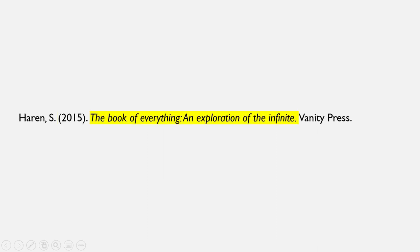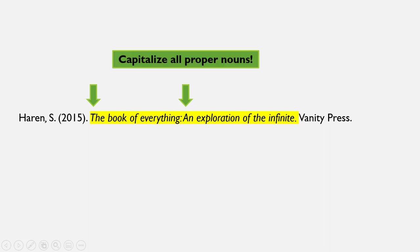The next element in the citation is the title. Only certain words of the title are capitalized in an APA book citation: the first word of the title, the first word of the subtitle if there is one — the subtitle is usually the part of the title that comes after a colon — and any proper nouns. All other words in the title are in lowercase in APA style. Also in APA style, the title is italicized.